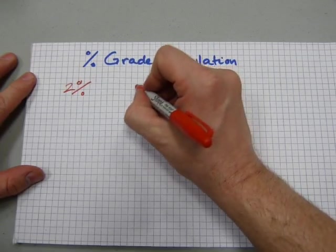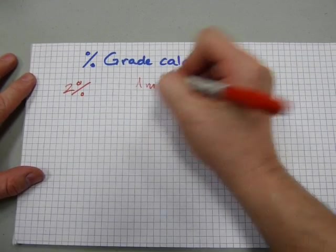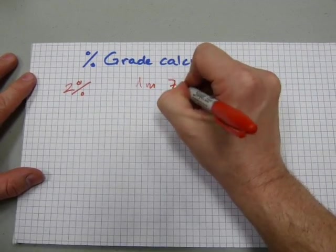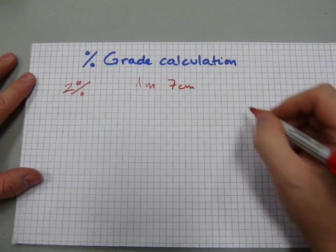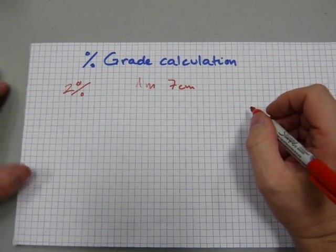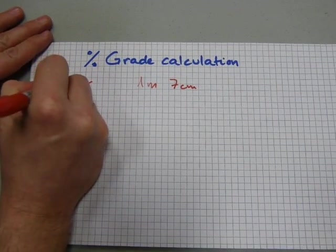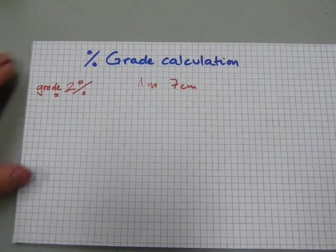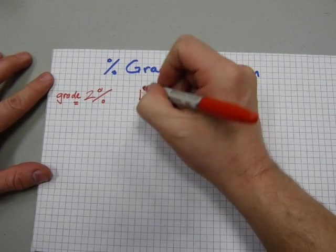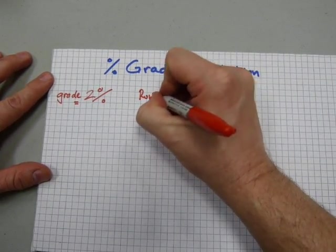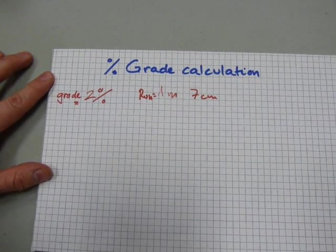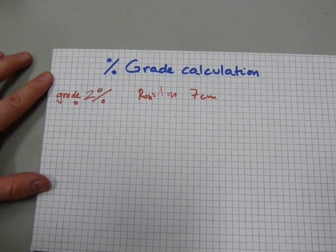Say length of a pipe is 1 meter, 7 centimeter. That's the length of a pipe and it's got a 2% grade. So this is grade equals 2% and the run of a pipe is 1 meter and 7 centimeters.